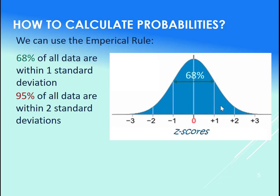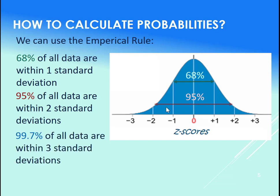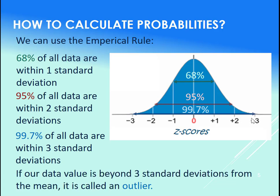95% of our data are within two standard deviations away from the mean, here we are. And 99.7% of our data are within three standard deviations, so from the minus three to the three.